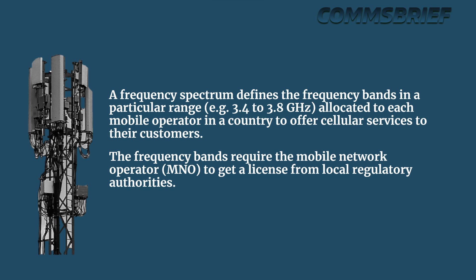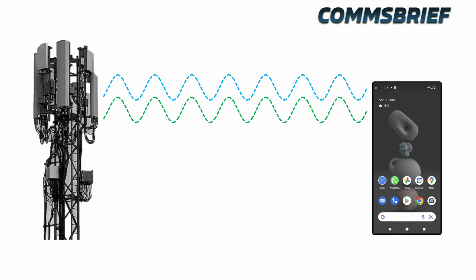The frequency bands require the mobile network operator to get a license from local regulatory authorities. A mobile operator can use a range of frequencies for various technologies — for example, they may decide to use certain frequencies just for 5G, 4G, 3G, or whichever network technology they want to operate. As an example, when 5G was launched in the UK, they decided to use the 3.4 to 3.8 GHz frequency band for 5G.